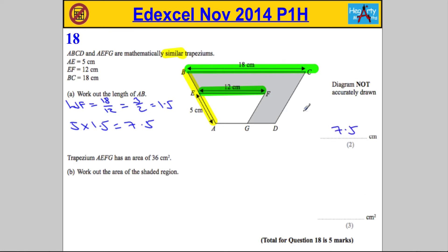Next part: it says the trapezium AEFG has an area of 36 centimeters squared. So AEFG, that's our small trapezium, this guy here has an area of 36 cm squared. We're asked to work out the area of the shaded region.